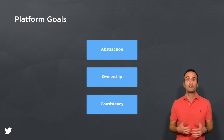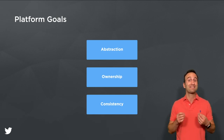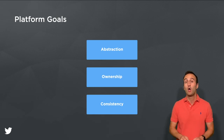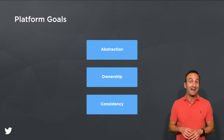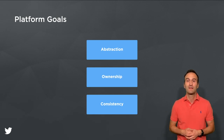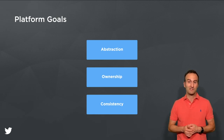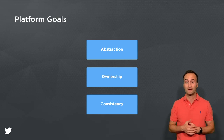Our ownership goal seeks to contain core and common API logic in a single place owned by a single API platform team, while also allowing non-common API components to be authored and owned by different teams. And our goal of consistency is to provide a consistent experience for external developers by relying on our API design principles to reinforce uniformity.